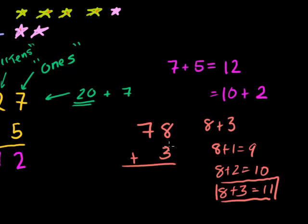So what we do here, we say 8 plus 3 is equal to 11. Put this one right here and carry the other one. Because 11 is 1 ten, 1 dime plus 1 penny. That's 11. And then we add the tens place: 1 dime plus 7 dimes is equal to 8 dimes. So 78 plus 3 is equal to 81.